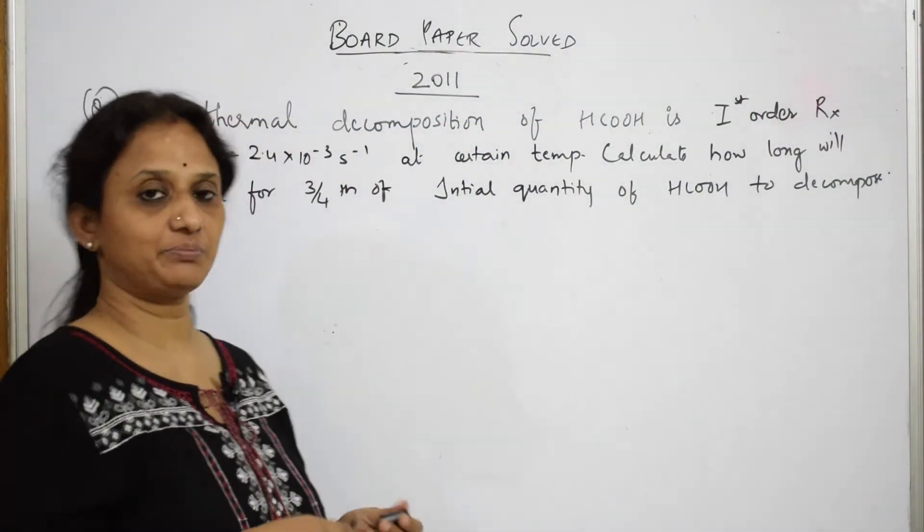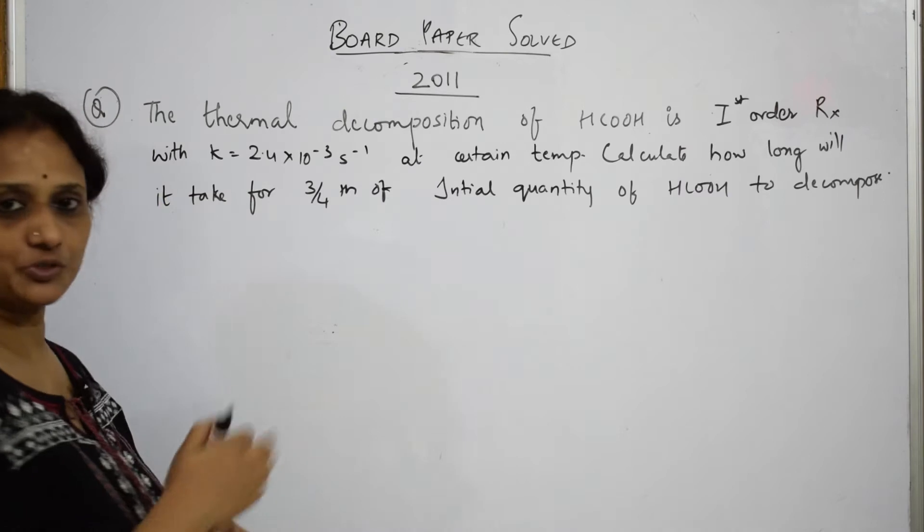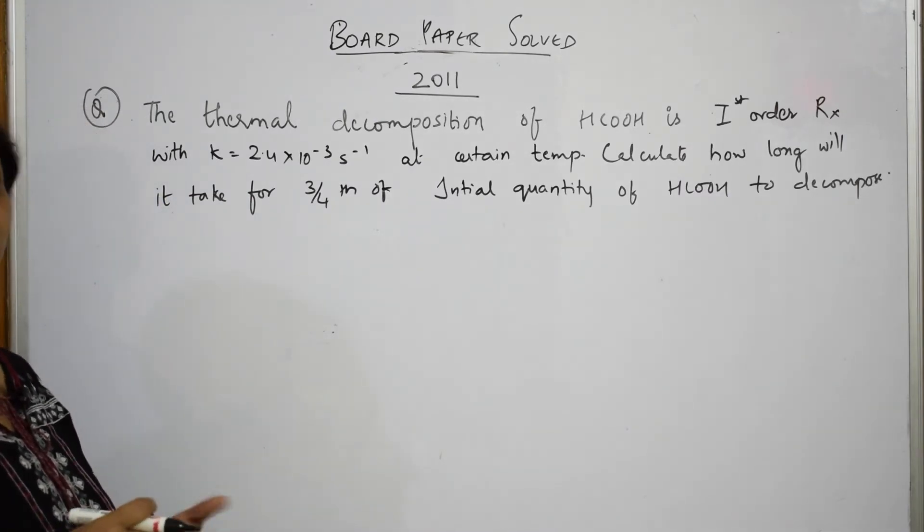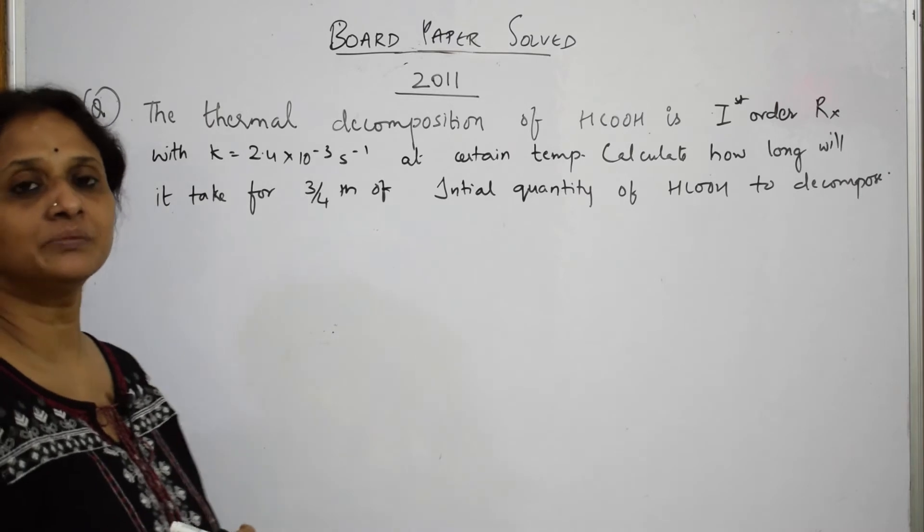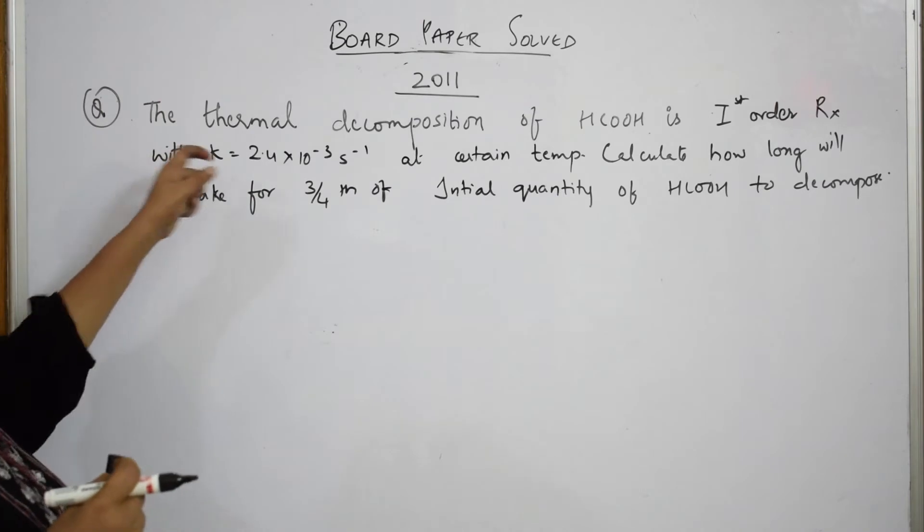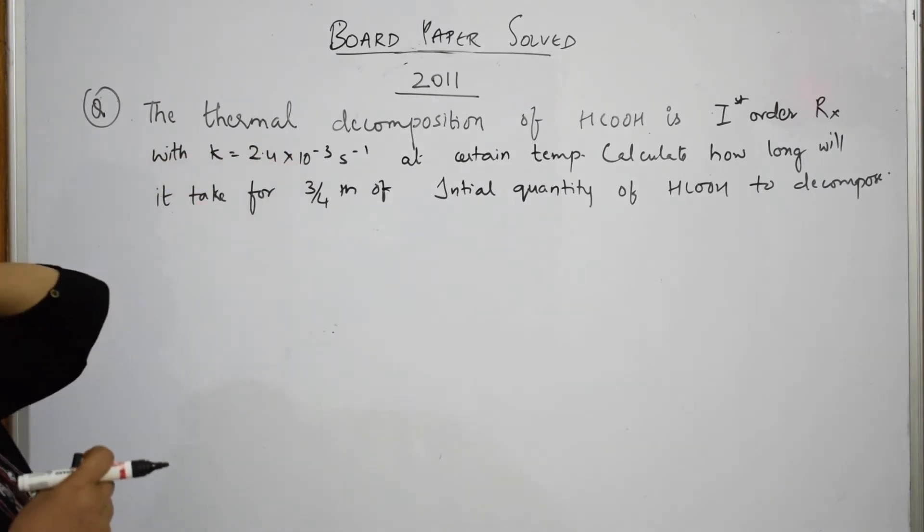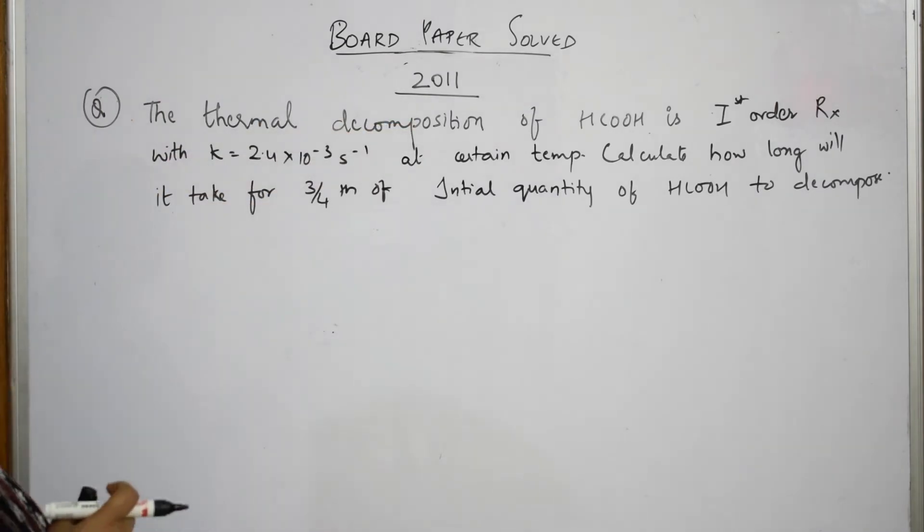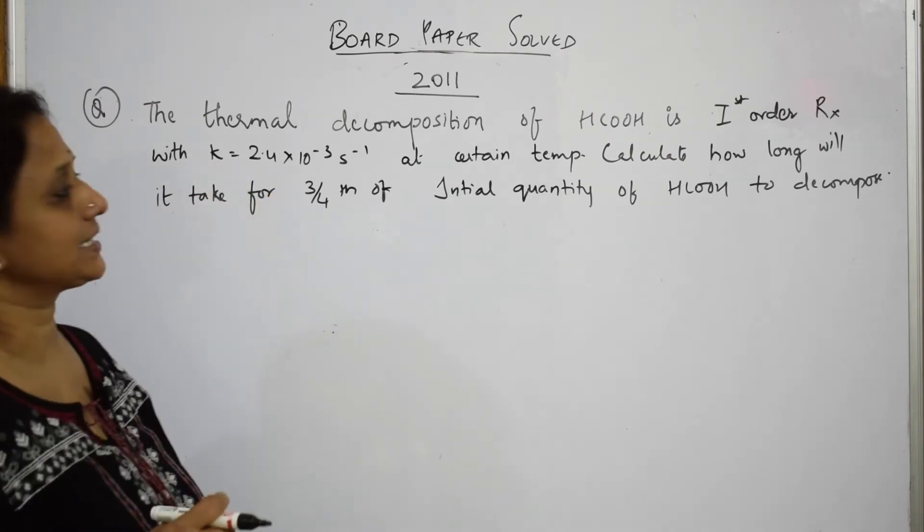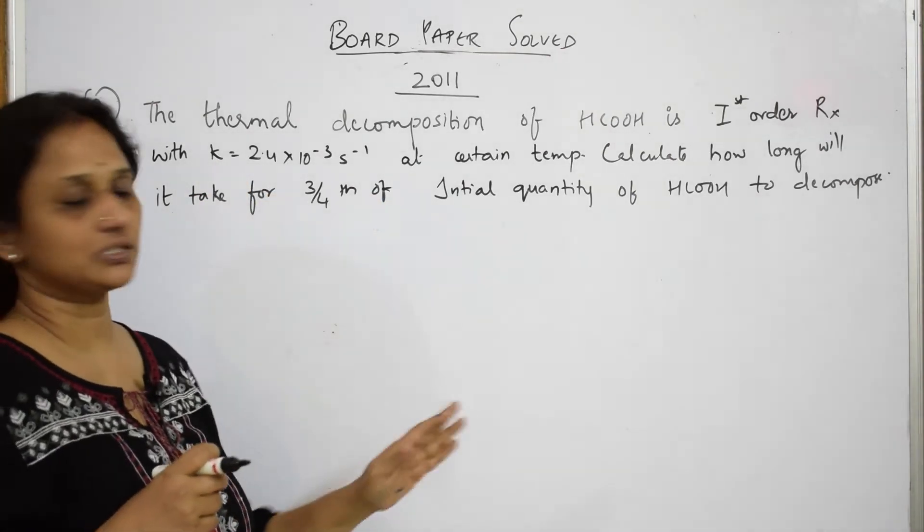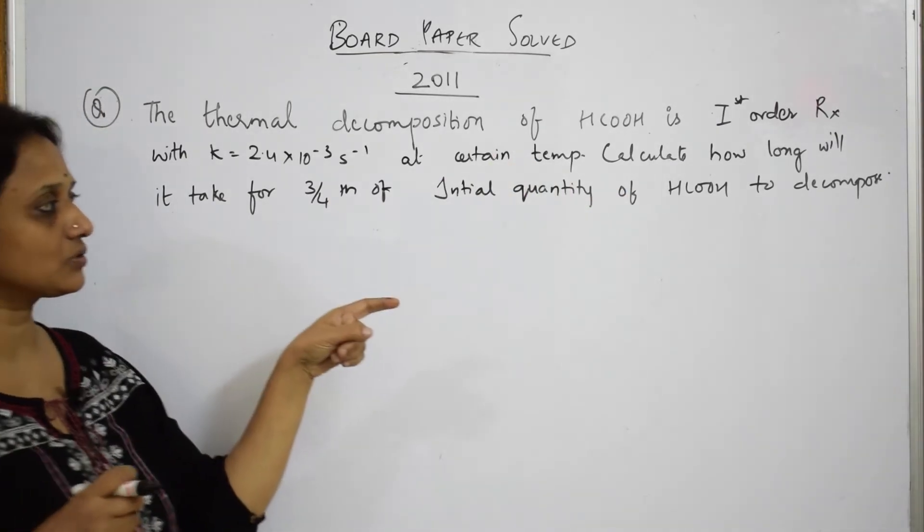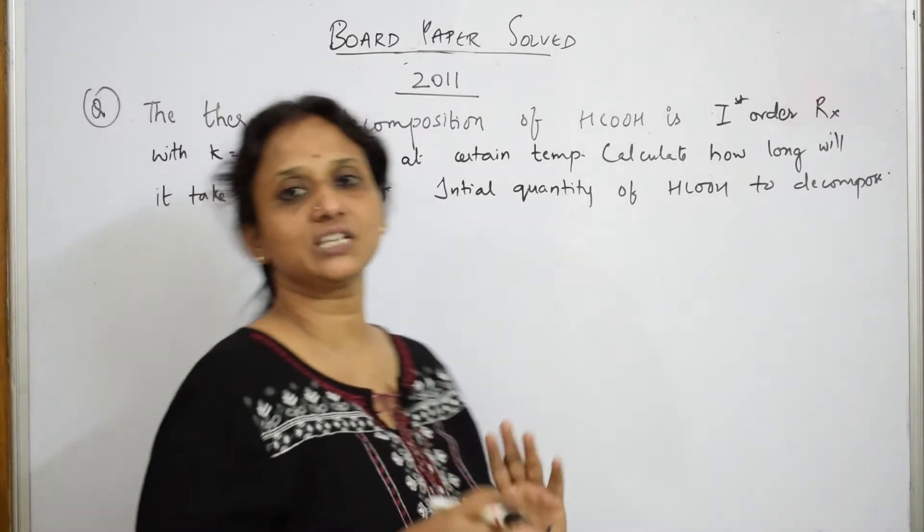Let us come back and do the 2011 paper. Most of the reactions are given under first order rate equation only. Let us come back and read. The thermal decomposition of formic acid is again first order rate reaction with rate constant of 2.4 into 10 raised to minus 3 per second at certain temperature. Calculate how long will it take for three-fourth of the initial quantity of formic acid to decompose.